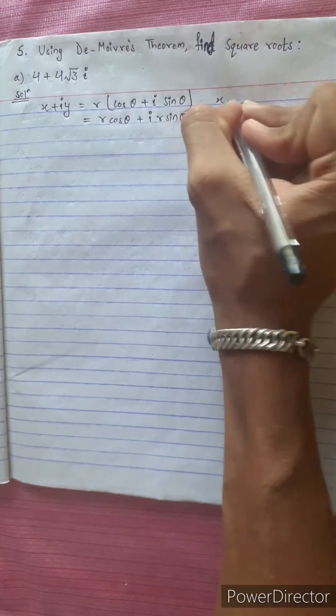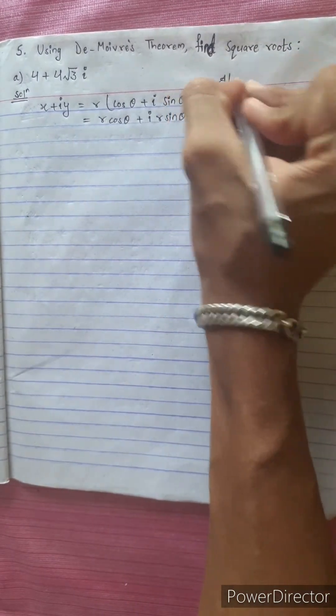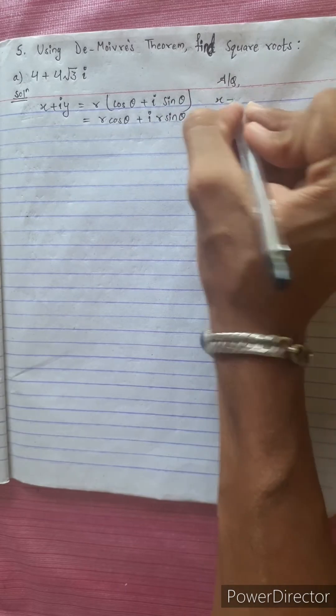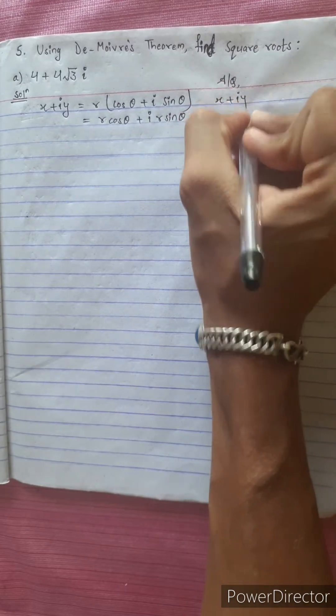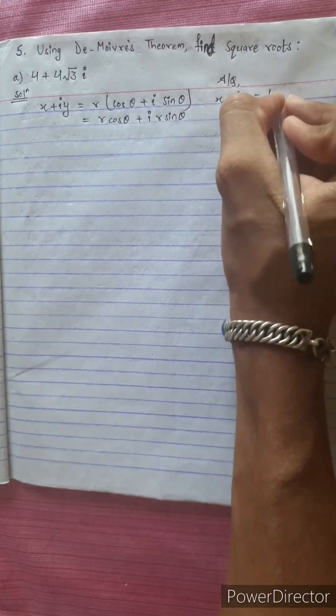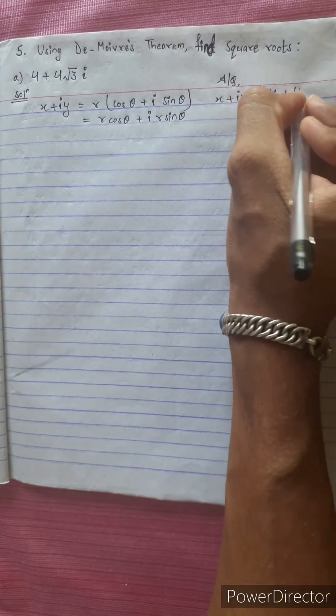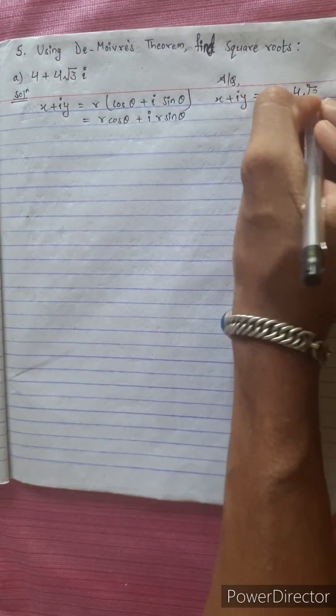According to the question, x plus iy is equal to 4 plus 4 root 3 i. This is the given formula we are working with.